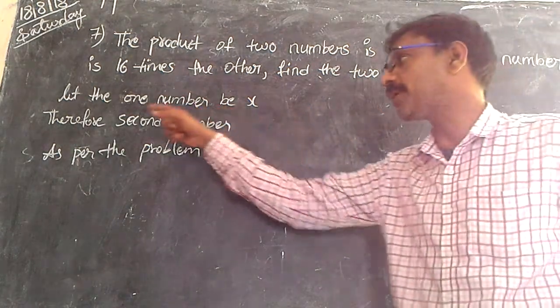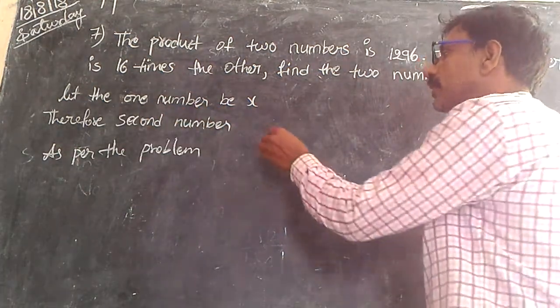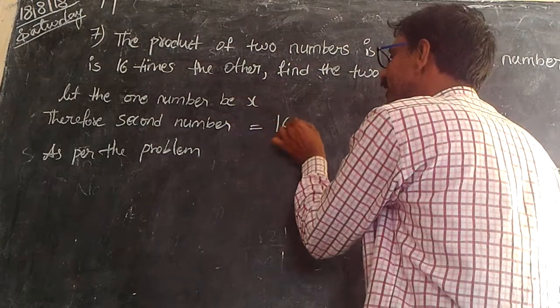Let the first number be x, the second number must be what? 16 times of x.